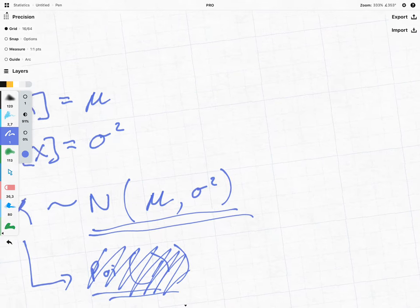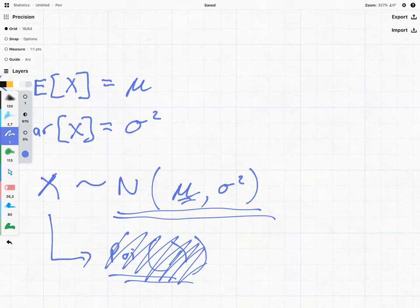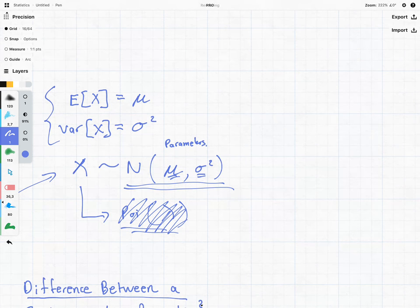So these things here, just to say it again, mu and sigma squared, these are our parameters. And these are unknown values that we're trying to figure out.